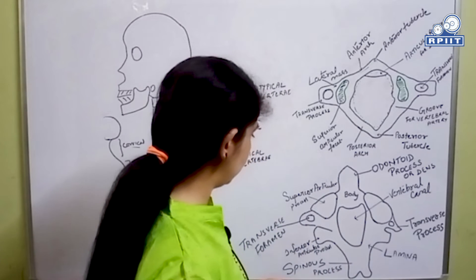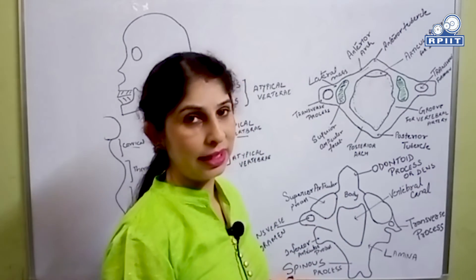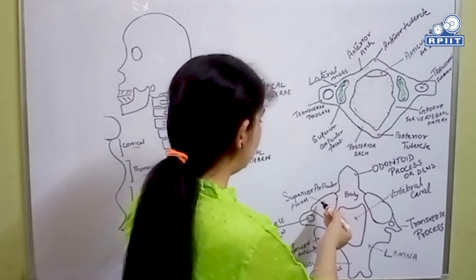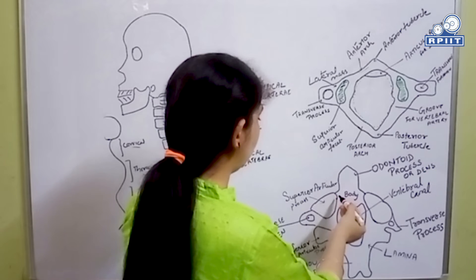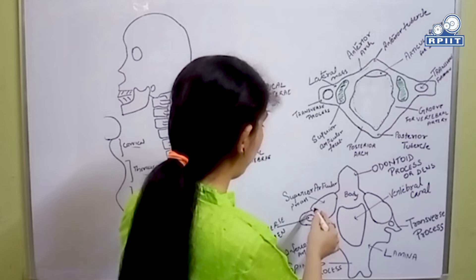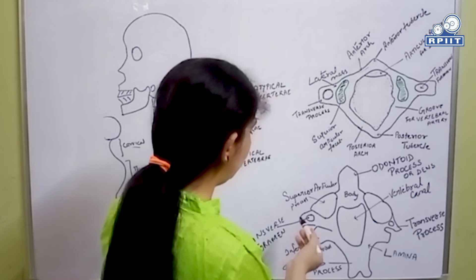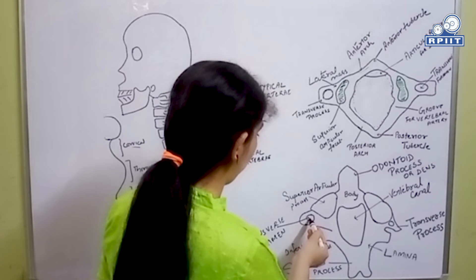The superior articular processes cross the lateral side of the body and overhang the transverse foramen laterally. Here you can see the transverse foramen, and the superior articular processes overhanging it.